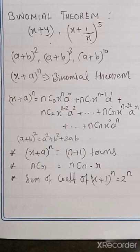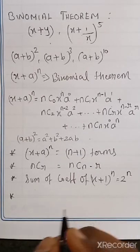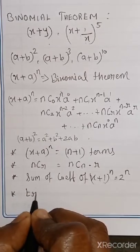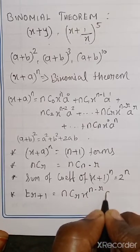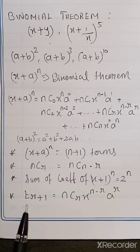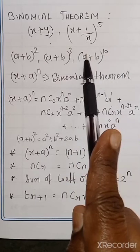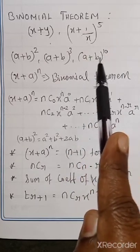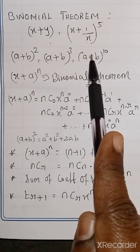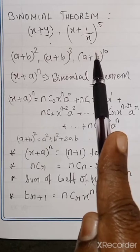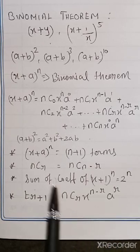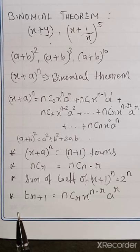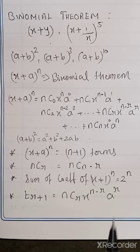Next is the term formula — this is an important one. What is the term formula? T sub R plus 1 equals NCR X^(N-R) A^R. This means: suppose in the expansion of A plus B power 10 there are 11 terms, and you want to find the fifth term — you can use this term formula to find any specific term directly.